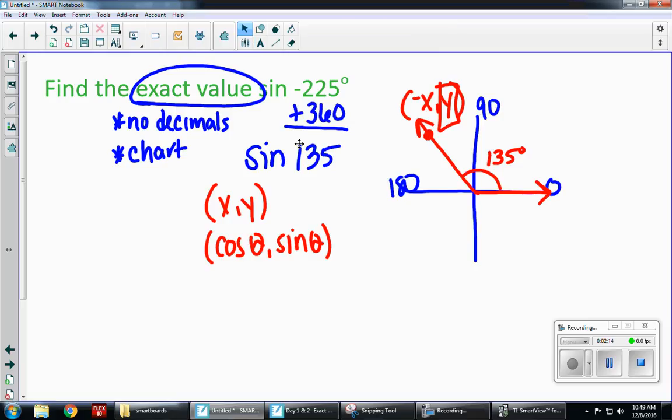I want to find my reference angle, which is always measured to the x-axis. So if I were to draw my triangle, it's this little piece in here. So I am at 135 degrees. I want to get back to 180. So my reference angle is 45.